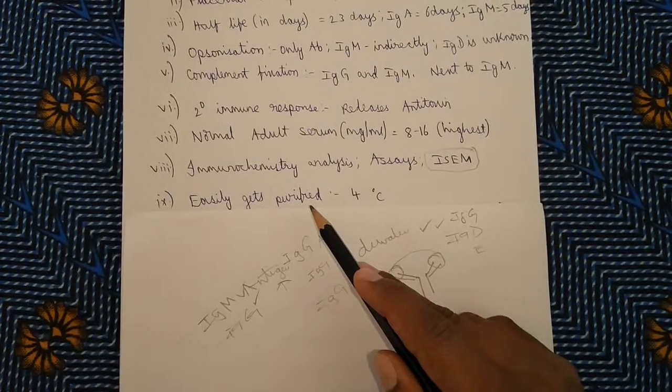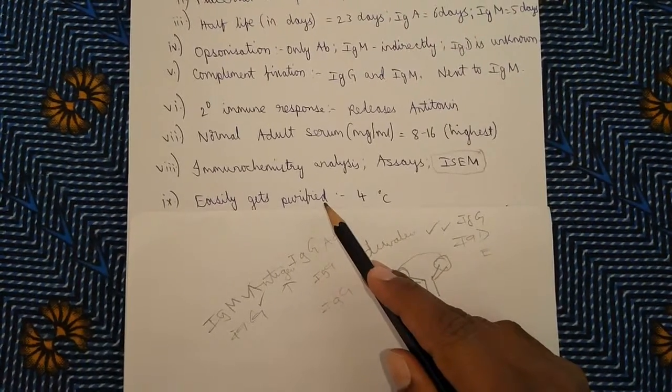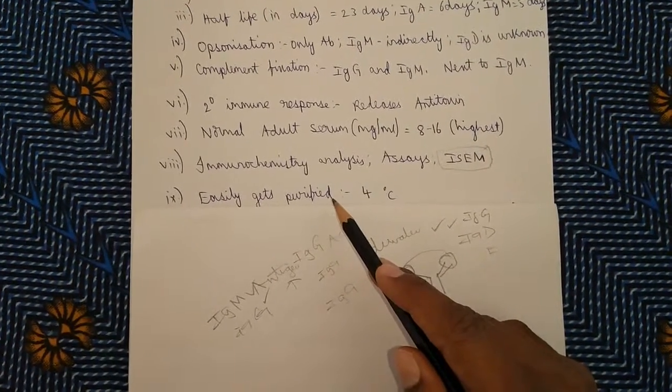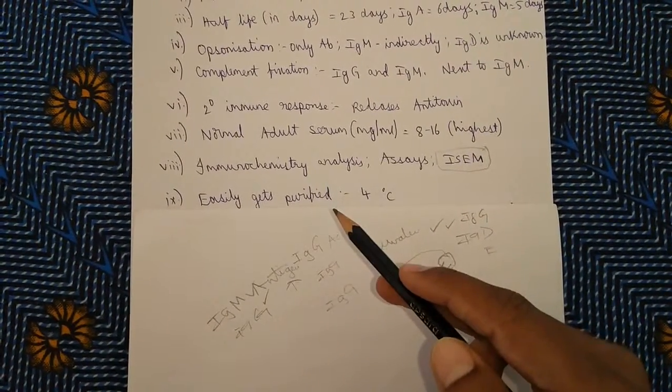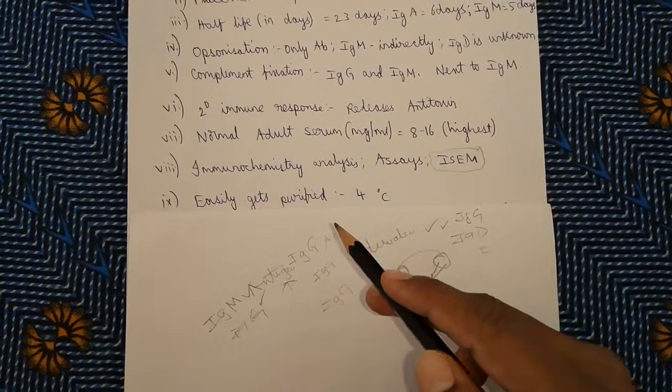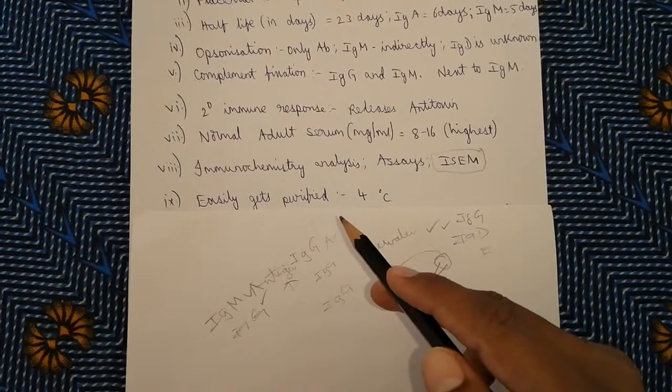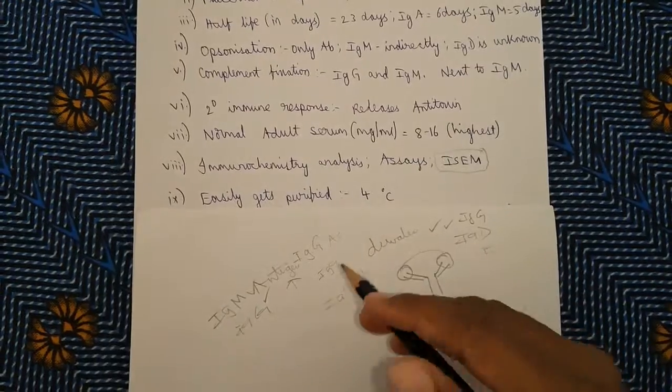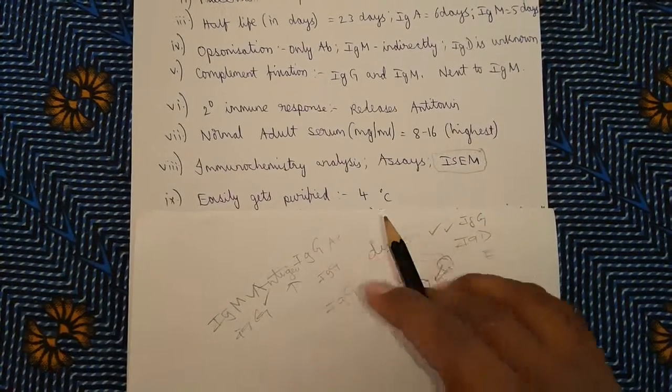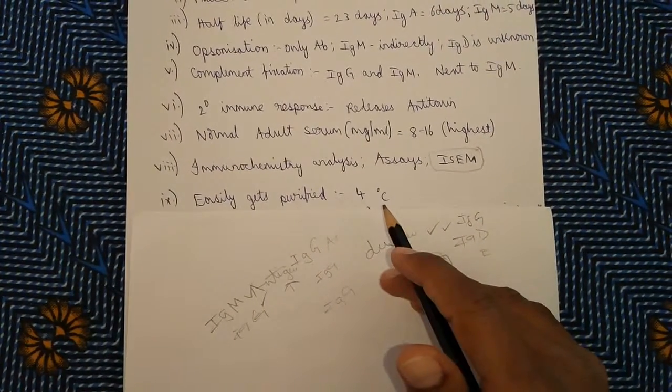The other special property IgG has is it gets purified very quickly than other immunoglobulins. When compared to IgD, IgM, IgE, and IgA, IgG is easily purified from the serum and it can be stored at 4 degrees centigrade or in lower temperatures for longer periods.